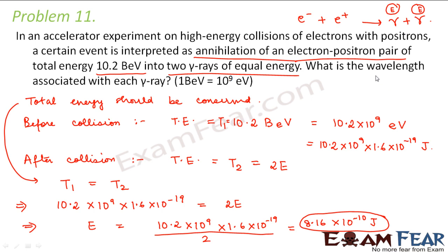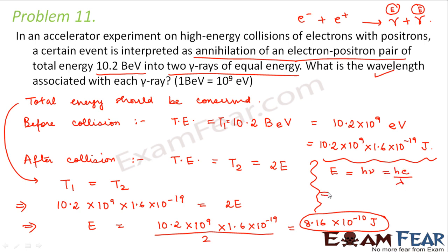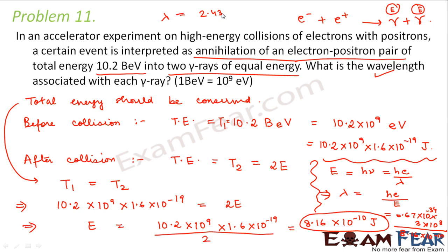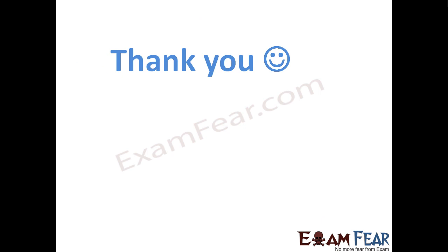E is the energy of each gamma ray, and we have to calculate the wavelength associated with each gamma ray. Since E = hν = hc/λ, we get λ = hc/E. So λ = (6.67 × 10⁻³⁴ × 3 × 10⁸) divided by (8.16 × 10⁻¹⁰), and the wavelength comes out to be 2.436 × 10⁻¹⁶ meters. Thank you — please visit examfear.com to watch free educational videos.